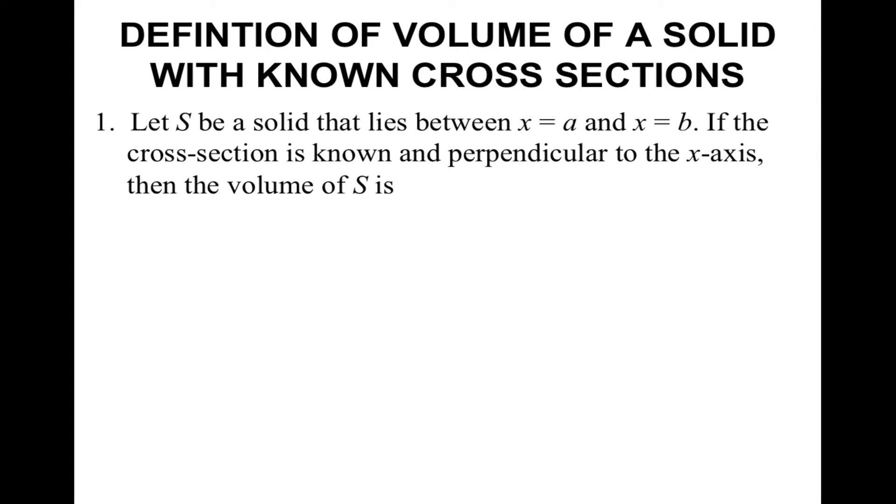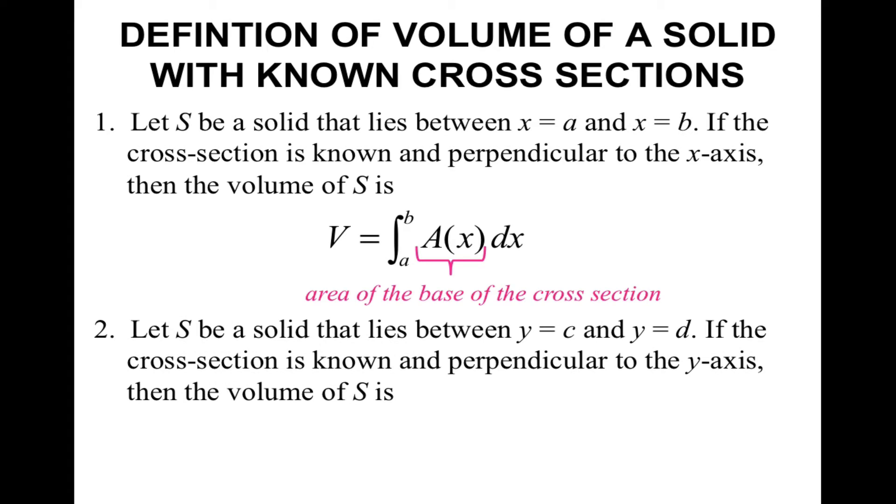The definition of the volume of a solid with known cross-sections. First, we're going to let S be a solid that lies between x equals a and x equals b. If the cross-section is known and perpendicular to the x-axis, then the volume of S is represented by the integral from a to b of the area of the base, or the area of the cross-section, times dx, which is your change of x. That gives you your volume, area of the base times the height of your solid.